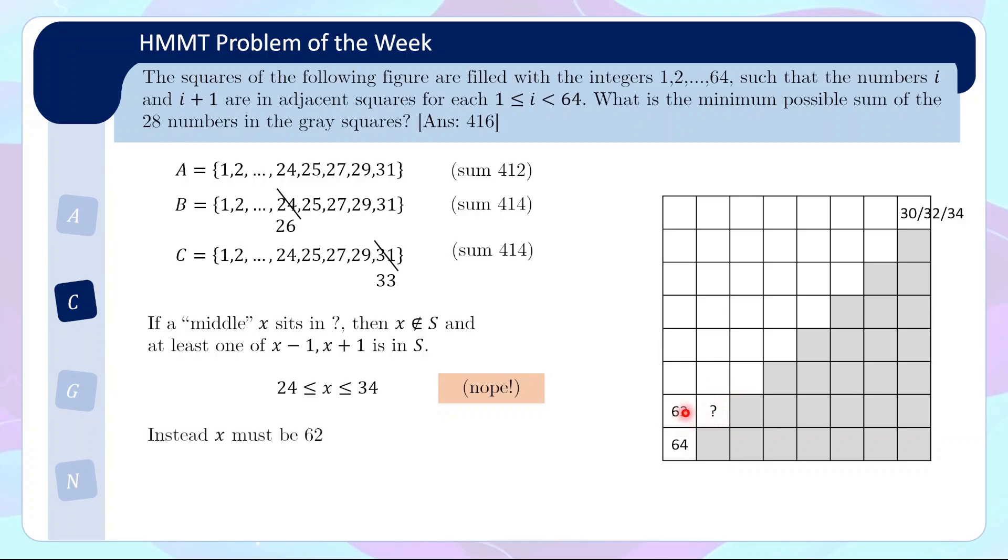Not possible to have a middle number here. So the conclusion is, this question mark must be 62, must be an end number. So we put 62, and similarly where 61, 61 cannot be in the grey cell, so 61 must be here. And then we ask what is this question mark.